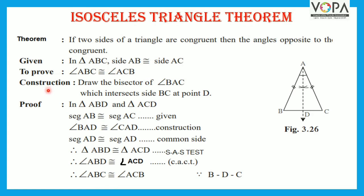For this, we need to do construction. Draw a perpendicular bisector of angle BAC, which intersects side BC at point D. So, here is the bisector of angle ABC, which is AD, ray AD.